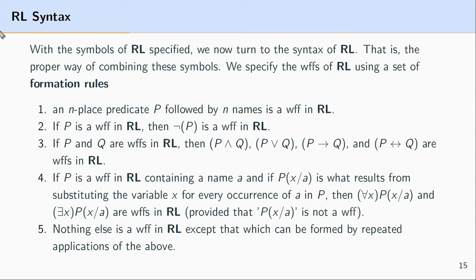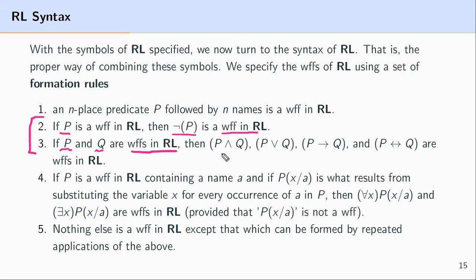The next two rules aren't terribly interesting in that they don't differ much from propositional logic. Rule two states that if you have a well-formed formula P, then the result of negating the entire thing is a well-formed formula. In the case of rule three, if P and Q are well-formed formulas in the language of predicate logic, then we can put them together in a conjunction, disjunction, conditional, or biconditional, and the result will be a well-formed formula.